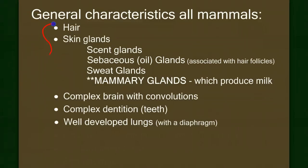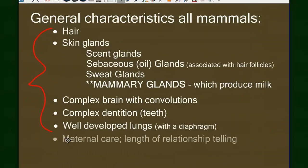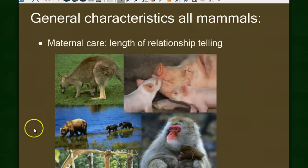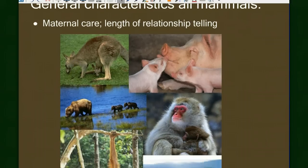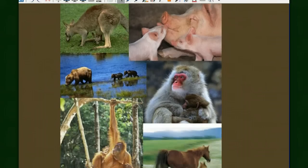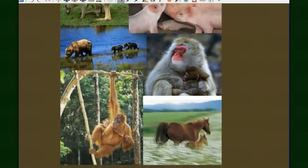Those characteristics are uniquely mammalian. The next couple of characteristics are shared by other animals but are still traits all mammals share. Let's briefly talk about maternal care. Other animals exhibit maternal care, but in mammals it takes on a different nature. With mammary glands and nursing, the connection between mother and offspring is much more intimate and important.